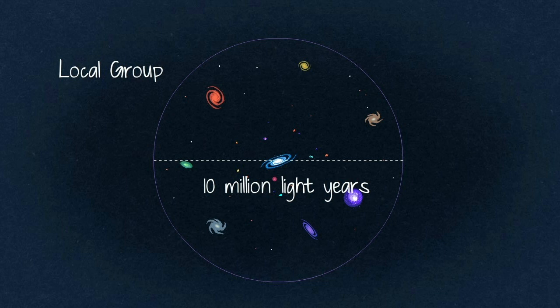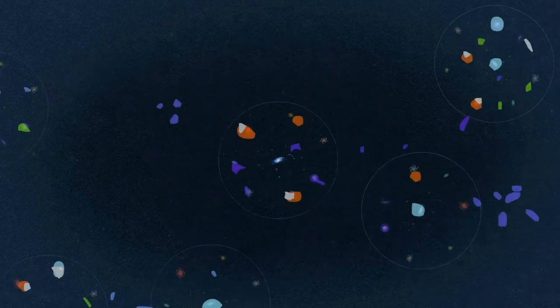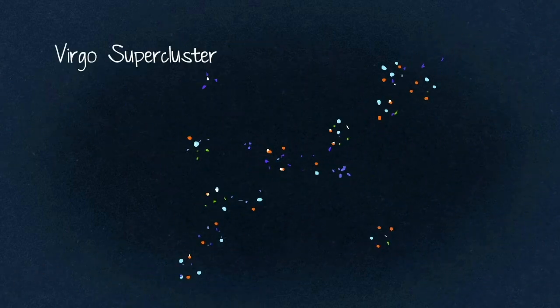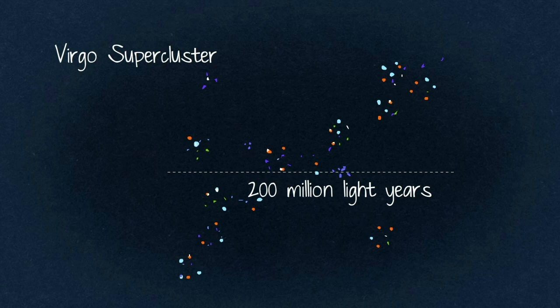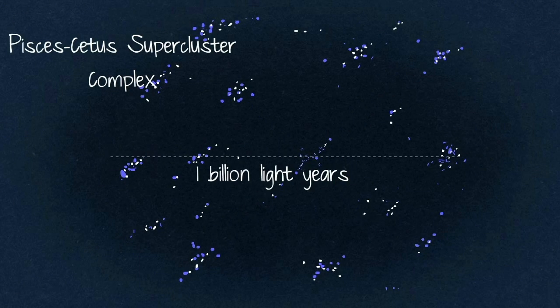Are you dizzy now? We're not done yet. The Local Group is part of the Virgo supercluster of 200 million light-years, which is part of the Pisces-C2 supercluster complex that's 1 billion light-years.